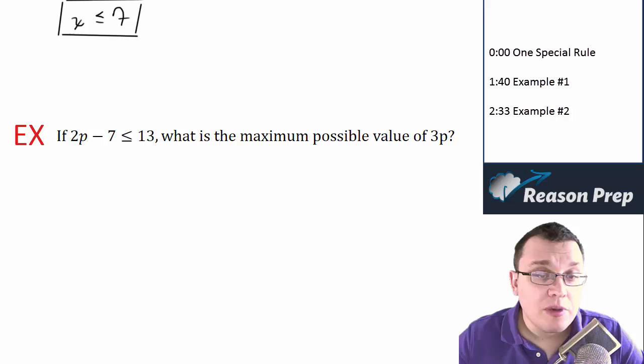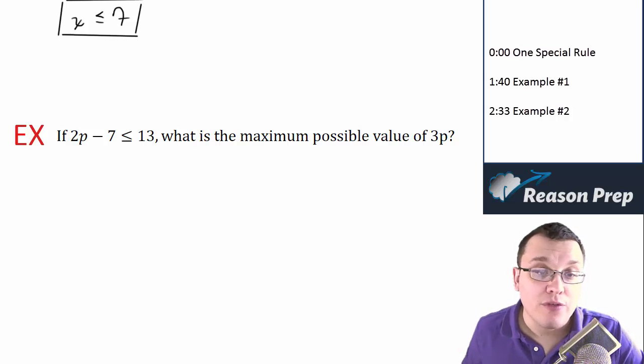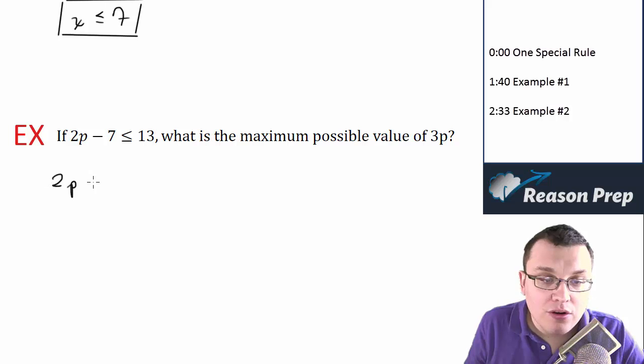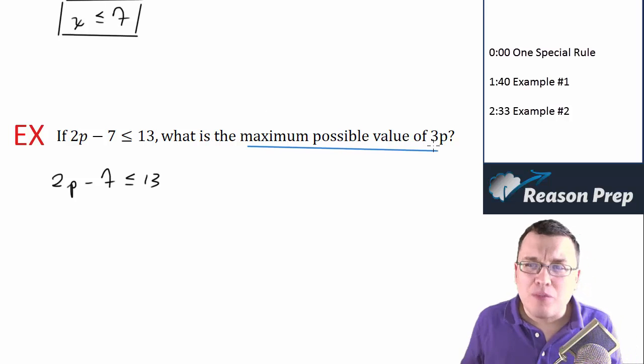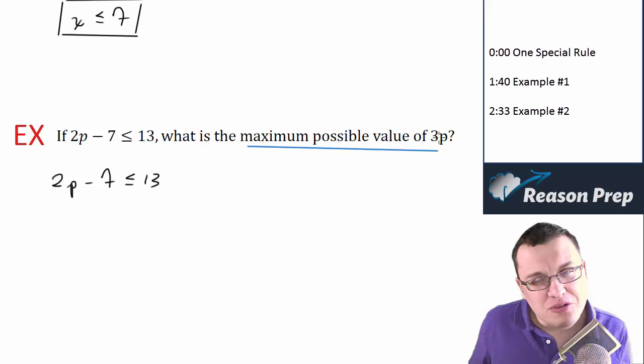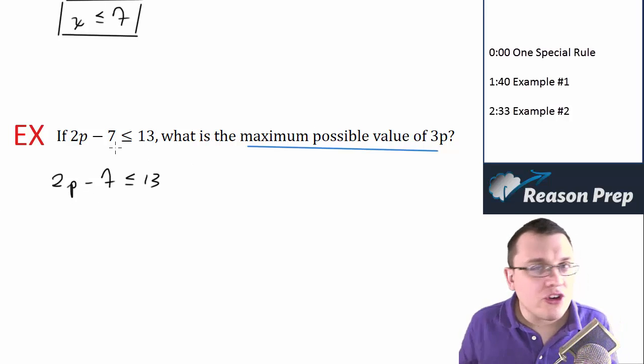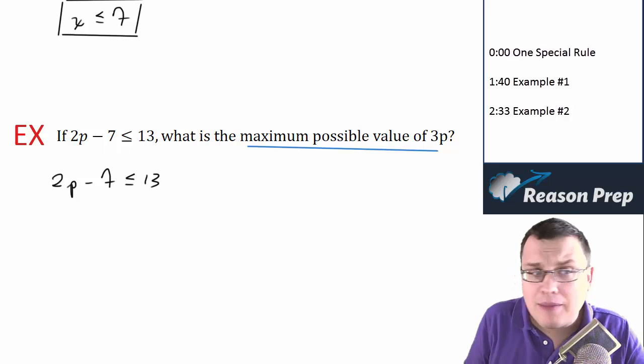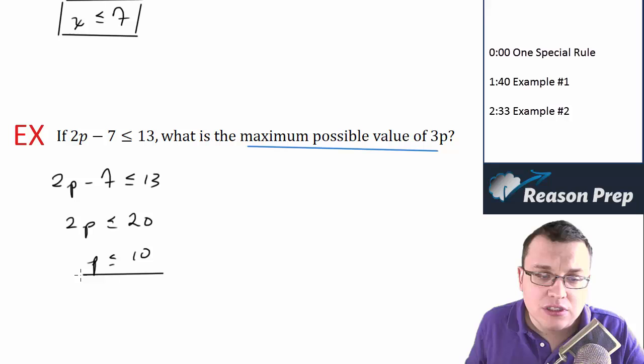Let's see another example. If 2p - 7 is less than or equal to 13, what is the maximum possible value of 3p? So begin with your inequality, and you may be tempted, because we're asking for the maximum possible value, to start plugging numbers in. You could start plugging in, but you're going to get lost. So I recommend just solving this directly. So we'll add 7 to both sides, we get 2p is less than or equal to 20, so p is less than or equal to 10.